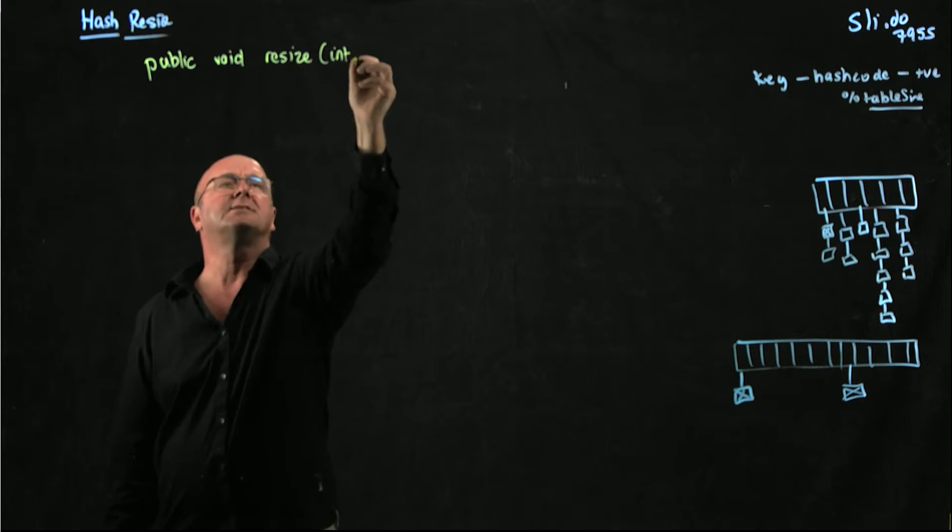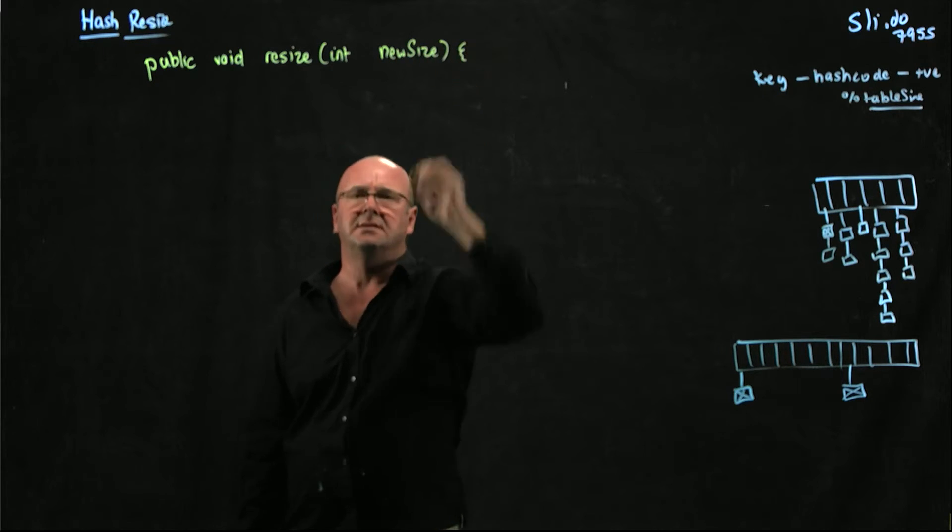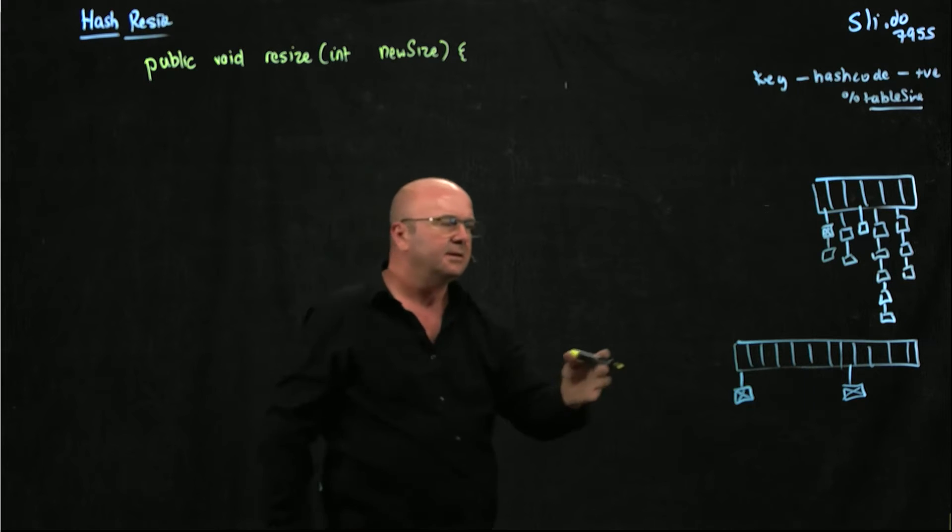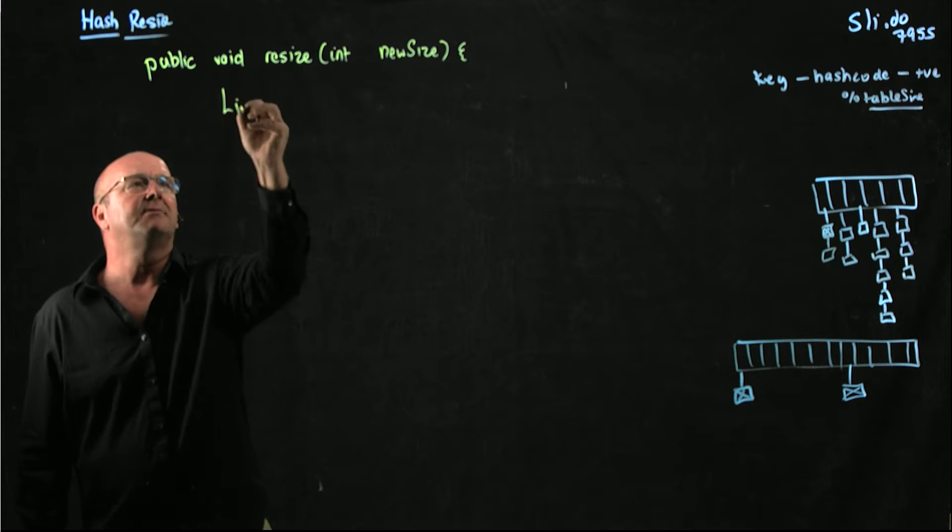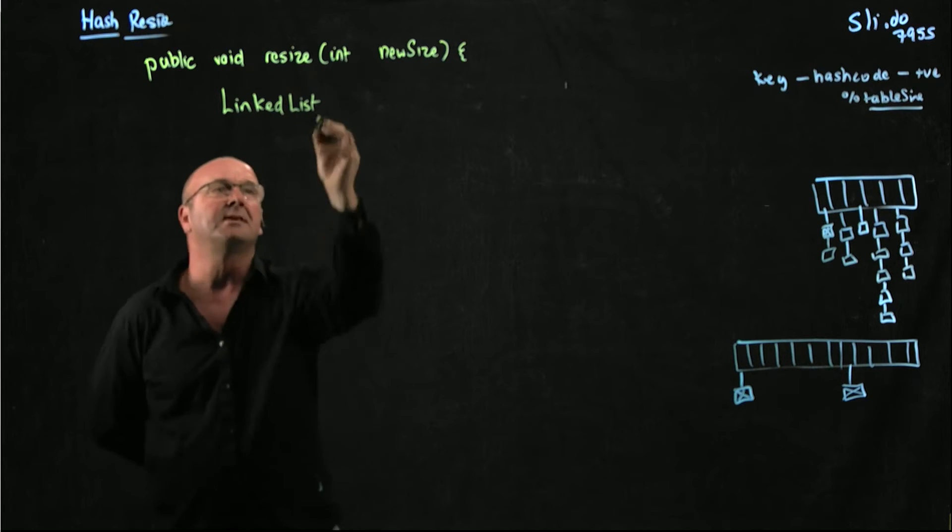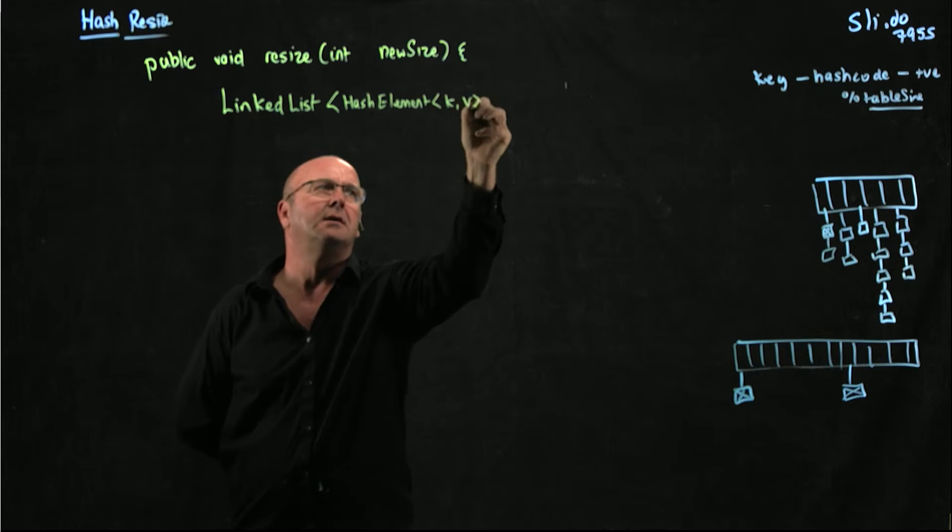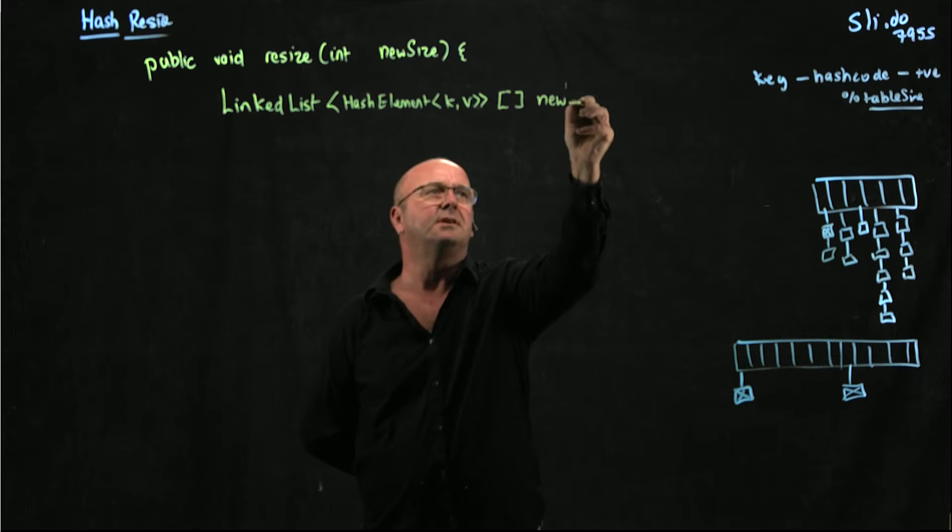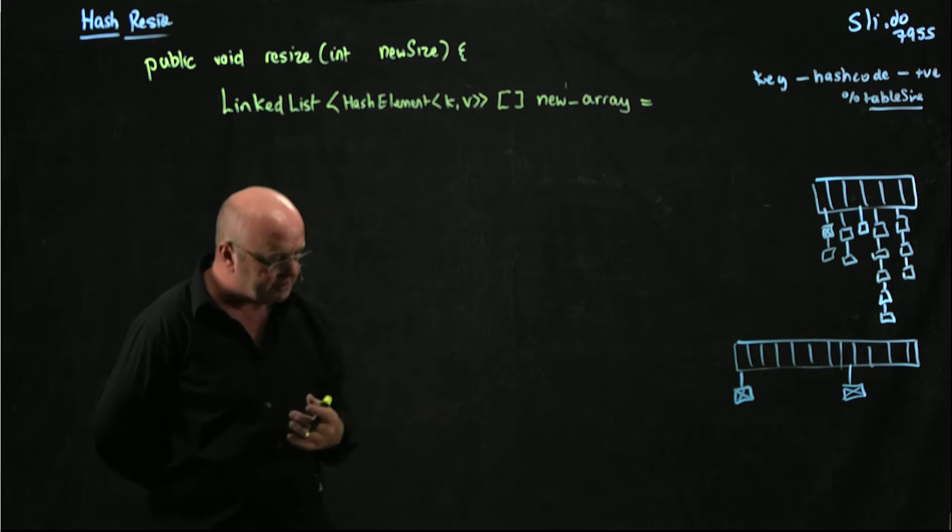Our resize method is going to take a single argument, and that argument is the new size of the array. The very first thing we're going to do is create a temporary variable that is our empty array of size new size. It's exactly like we've seen in our constructor. So we're going to have a linked list hash element KV and I'm just going to call this array new_array.